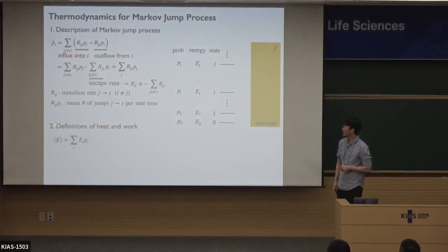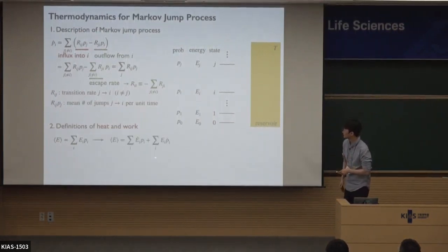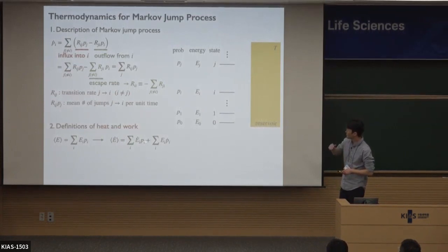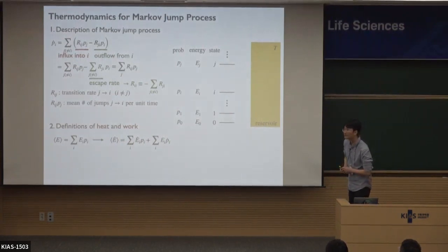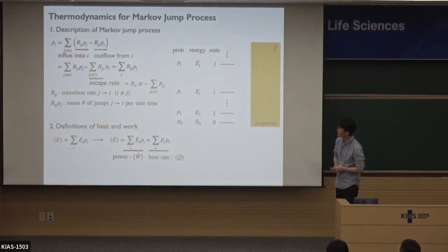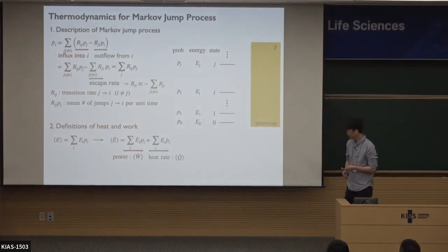This is the average energy of the system. The time derivative of this average energy has two terms. The first term is about the energy level change, and the second term is about the population number change. I will show that the first term is the work rate, and the second term is the heat rate.